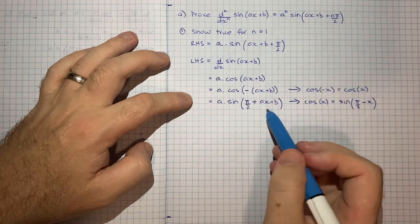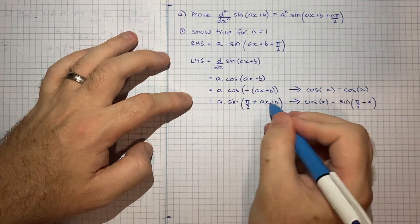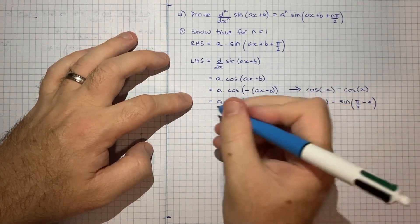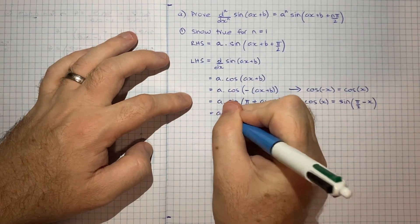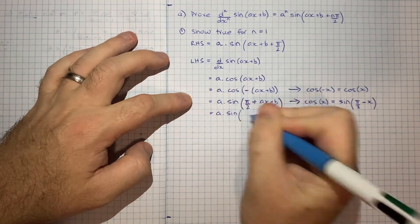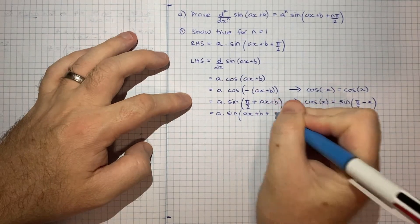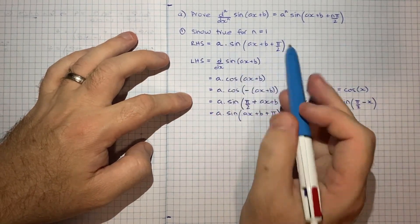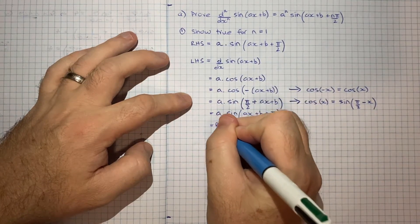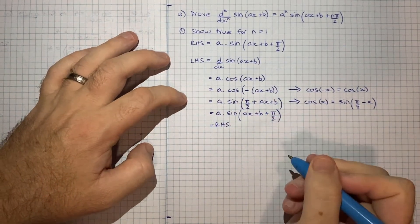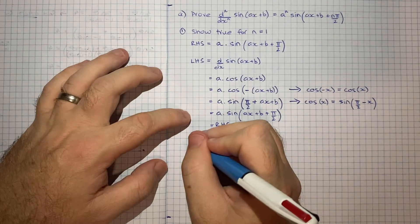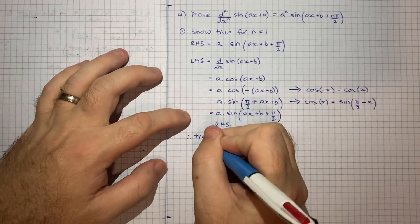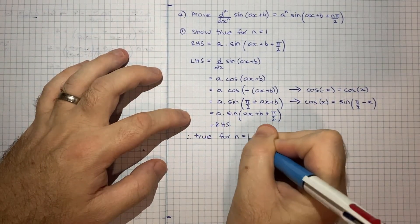Or in other words, plus ax+b. And that's basically using the fact that cos of x is equal to the sign of π/2 minus x or 90 minus x is how you might remember that. And really all I need to do, I'll just reverse the order of these two to make it exactly clear. So that gives us a times sin of ax+b+π/2. And that is exactly equal to the right hand side. So we can conclude that this is true, this relationship is true for n is equal to 1.